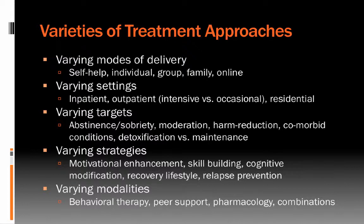Some of the different ways that treatment may vary includes things like modes of delivery. Much of substance use treatment is self-help. One of the most popular treatment approaches in America, Alcoholics Anonymous, is actually a self-help or co-self-help approach — it doesn't involve professionals. Treatment can involve individuals or groups. The most common type of professional treatment is group-type approaches, mostly because they're more cost-effective and economical. Treatments can involve the family versus the individual, and treatment can even be delivered online.